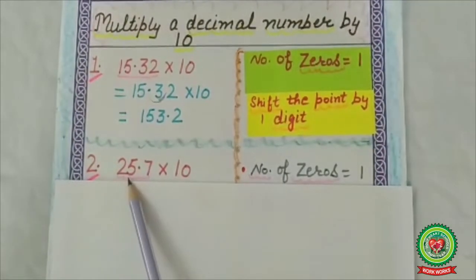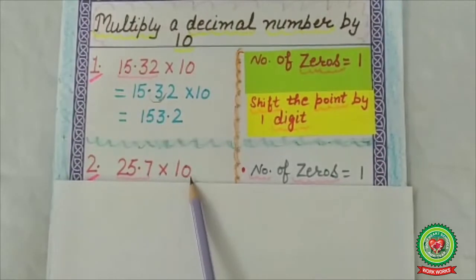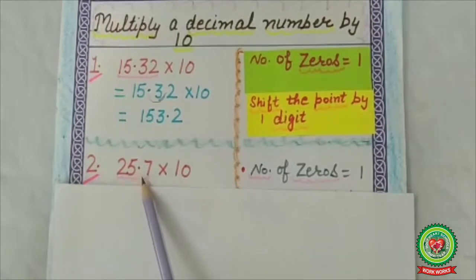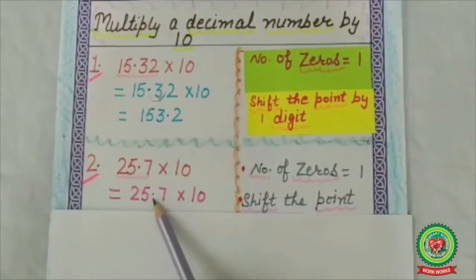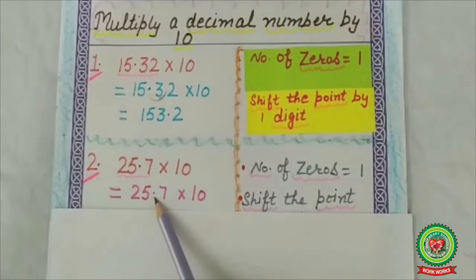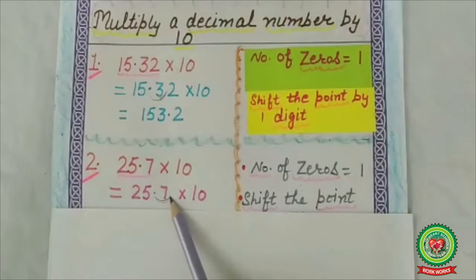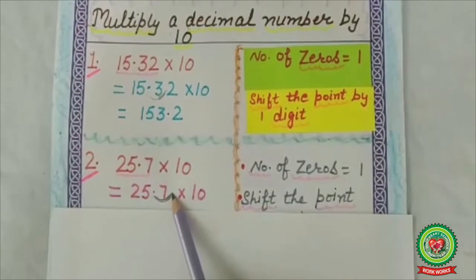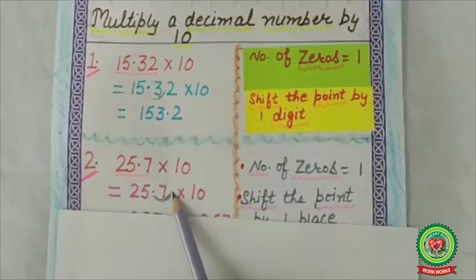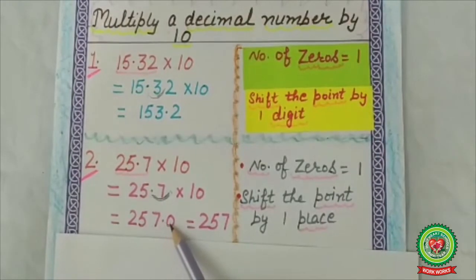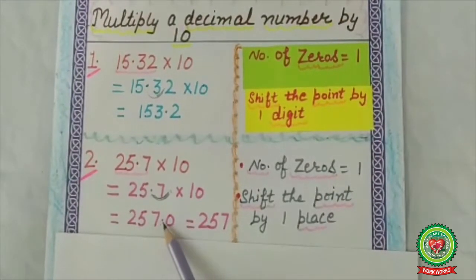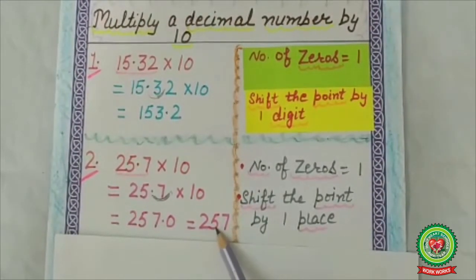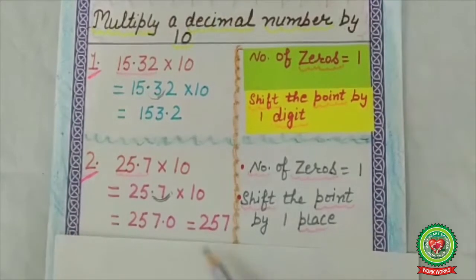Second example: 25.7 multiplied by 10. Number of zeros is 1, so shift the point by one digit. The point is currently between 5 and 7. We shift it one digit to the right, and now the point comes after 7. Since no digit is after 7, we put a zero: 257.0, which is equal to 257.